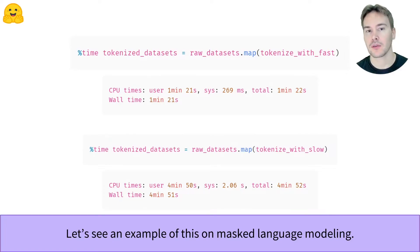This is because we pass along the text to the tokenizer one at a time. This is a common mistake to do with fast tokenizers, which are backed by Rust and thus able to parallelize the tokenizations of multiple texts.